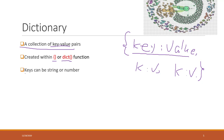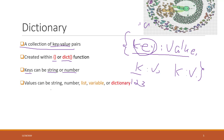The keys can be a string or a number — for example, string 'a' or numbers like 1, 2, 3. For the values, they can be a string, a number, a list, a variable, or even another dictionary, so dictionaries can also be nested.